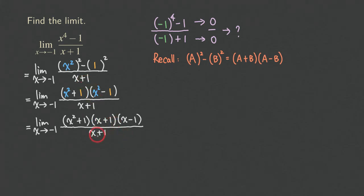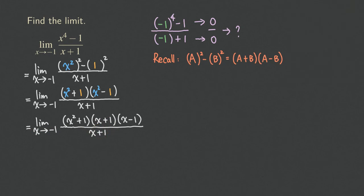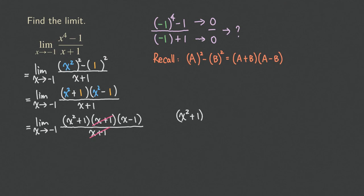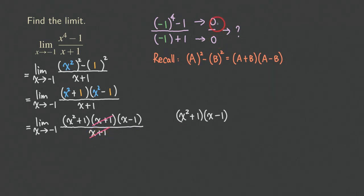Now we see the factor causing the indeterminate form: x plus one appears in both the numerator and the denominator, and plugging in negative one gives zero in both. So we can cancel them. After canceling, we are left with x squared plus one times x minus one, and the denominator becomes one — the factor causing the zero over zero is gone from both top and bottom. Now we can plug in negative one.